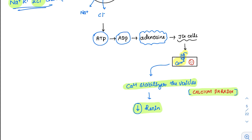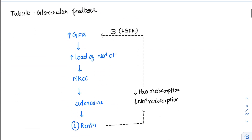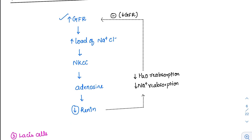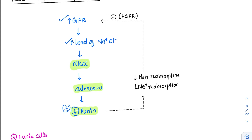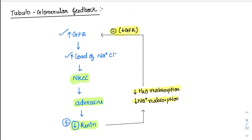When renin release is decreased, the GFR comes down, since renin was helping vasoconstrict, reabsorb sodium, and increase blood volume. This entire feedback mechanism is called tubuloglomerular feedback. Starting point: whenever there is a rise in GFR, there is an increase in NaCl load. The NKCC senses it, forms adenosine, and adenosine decreases renin. When renin is decreased, water and sodium reabsorption come down, and ultimately GFR decreases. The raised GFR is thus corrected by the renin mechanism.